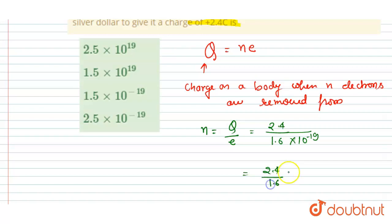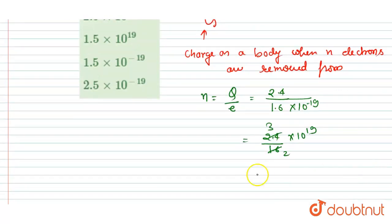So I will write into 10 to the power 19. So this will be 3 by 2, from here I will get 1.5 into 10 to the power 19 as the number of electrons. So this much electrons should be removed from the body so that the body could have a charge of plus 2.4 coulomb.